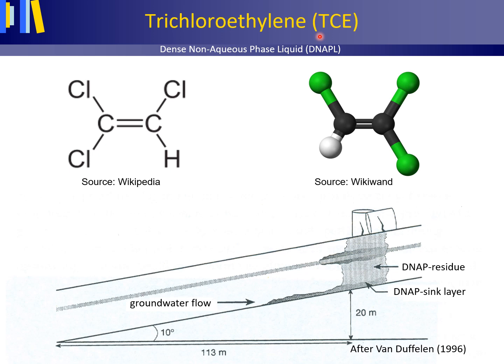Since TCE is heavier than water and has a low solubility value, it is classified as a DNAPL — a dense non-aqueous phase liquid. A DNAPL will tend to sink through the groundwater column until it encounters an impermeable layer in the subsurface. When the impermeable layer is tilted, as for instance in an ice-pushed ridge, the DNAPL will sink further along the dip of this impermeable material, independent of the direction of the groundwater flow.